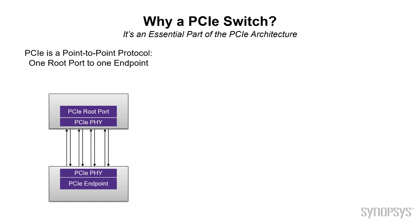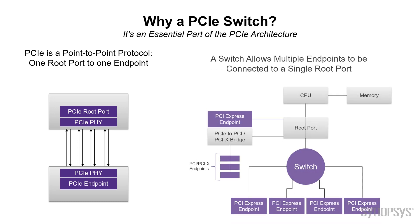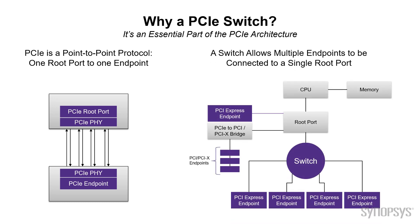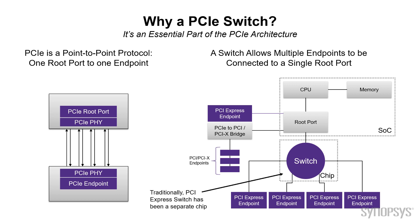So you need a switch. If you look on the right-hand side, you'll see the switch is a central part of the PCI Express architecture. It essentially allows a root port to talk to a lot of different devices. You can see in the diagram what we're showing is four separate PCI Express endpoints. And traditionally, the function of the switch, as well as the upstream port, CPU with its memory and root port, are separate SOCs.